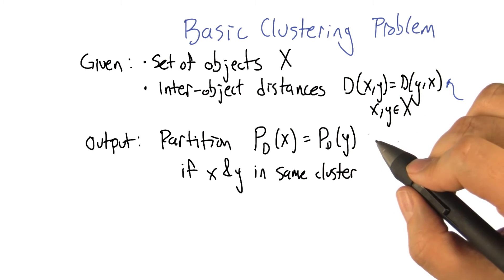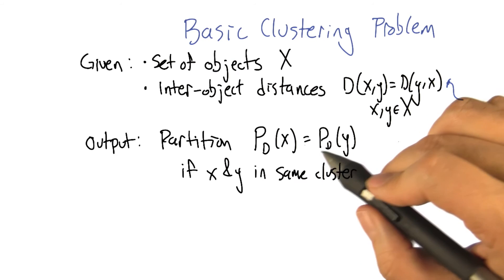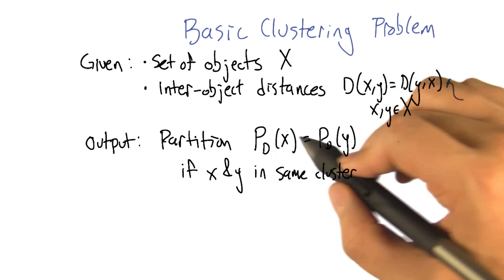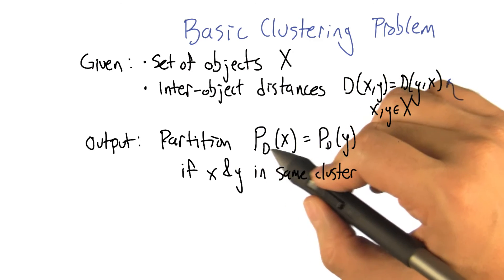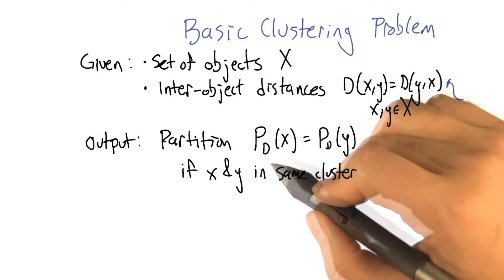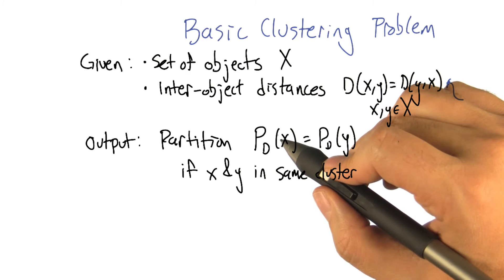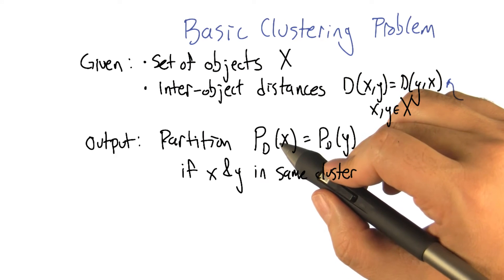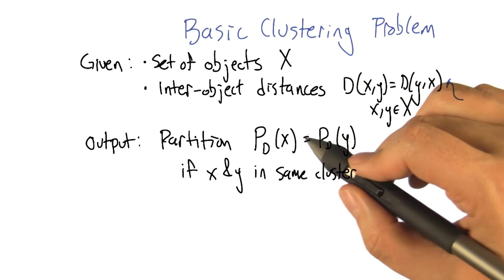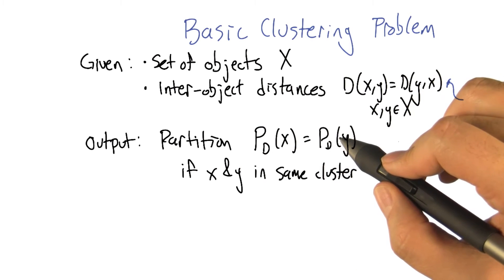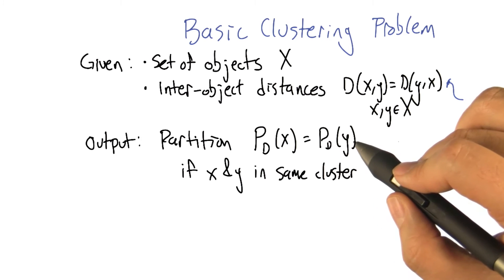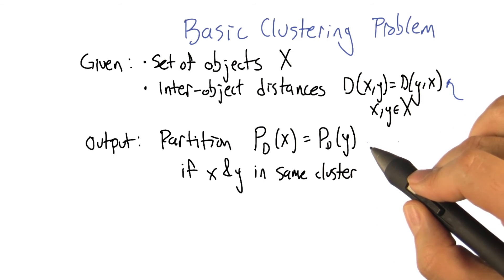So that's the input. And the output that a clustering algorithm needs to create is a partition. P sub D, the partition function defined for some particular distance set D for some object X, is just going to be some label, but it's such that if X and Y are going to be assigned to the same cluster, the same partition, then they're going to have the same output of this P D function. Does that make sense? That does make sense.